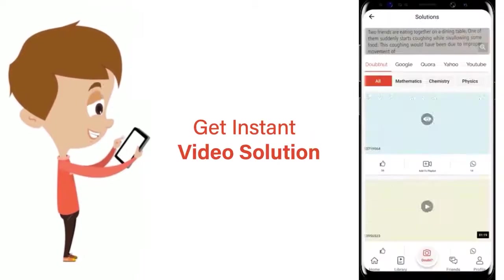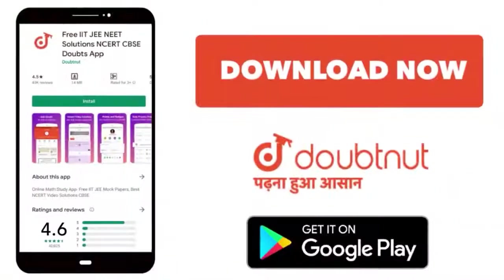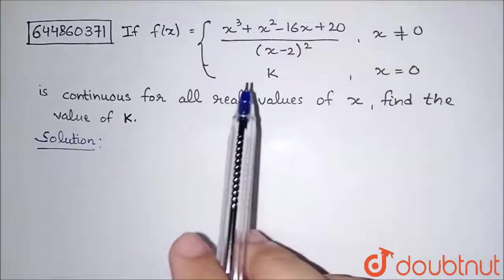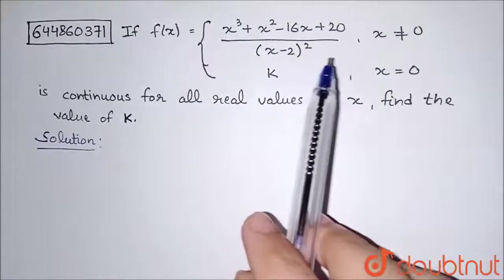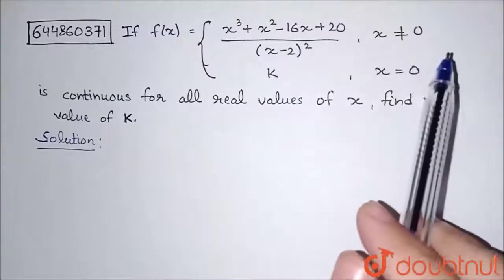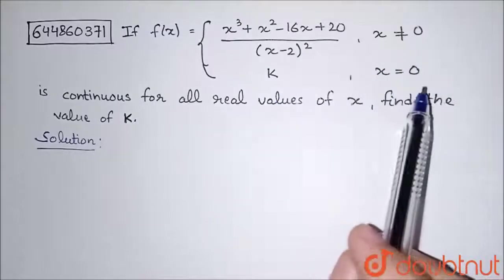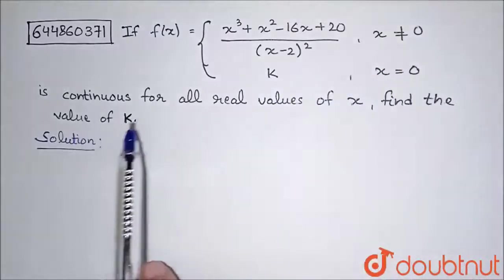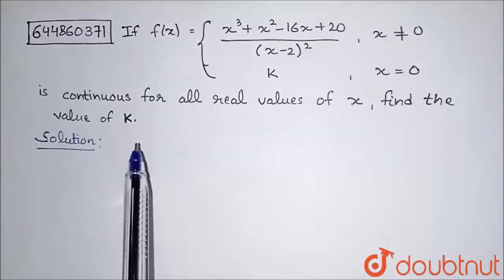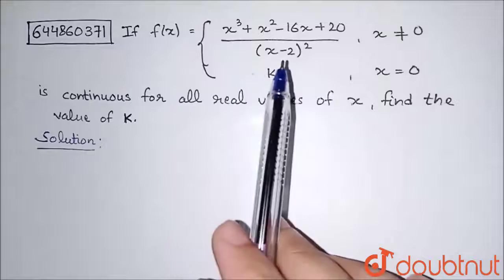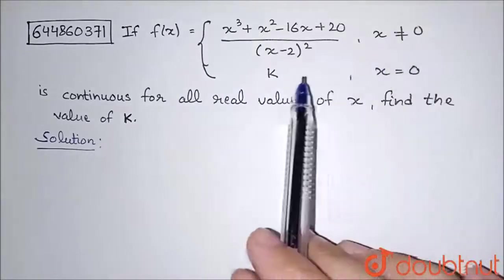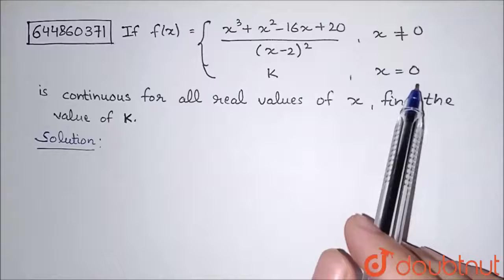The question is: if f(x) equals x cubed plus x squared minus 16x plus 20, divided by (x minus 2) squared, for x not equal to 0, and k for x equal to 0, is continuous for all real values of x — find the value of k. In this question, f(x) has two definitions: the first for x not equal to 0, and the other for x equal to 0.